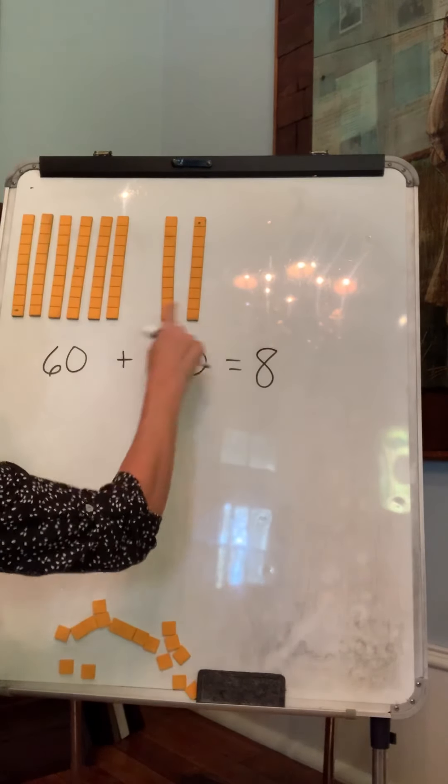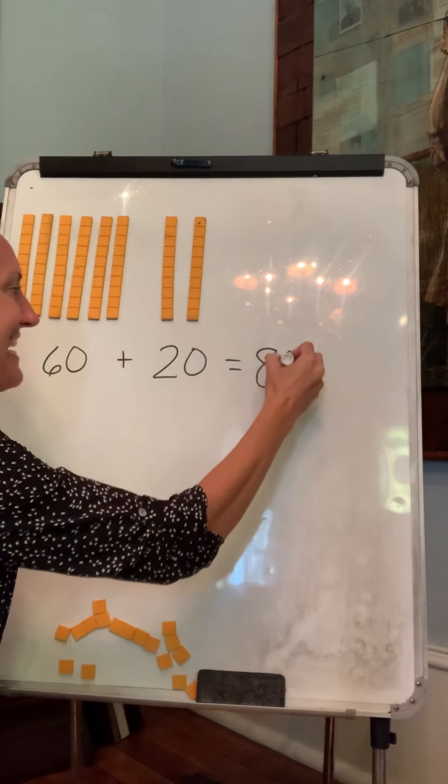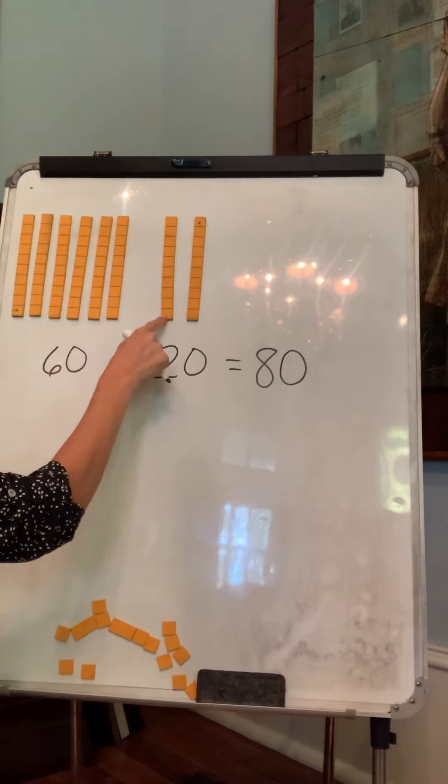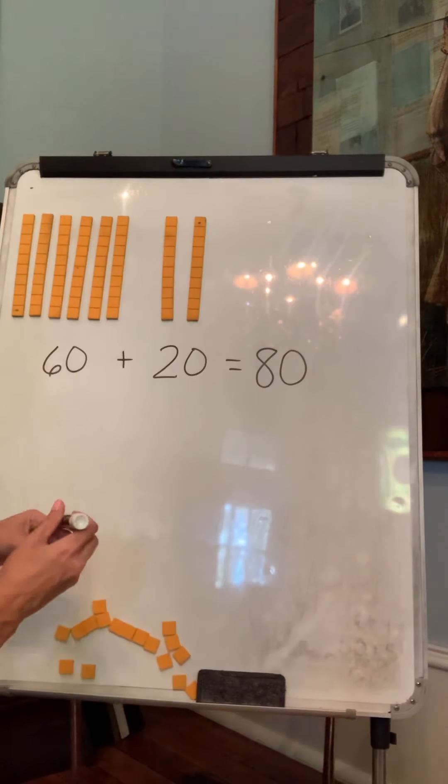I don't have any ones. Eight tens is the same as 80. 10, 20, 30, 40, 50, 60, 70, 80. Okay. You guys know how to do this. We're just reviewing how to add our tens.